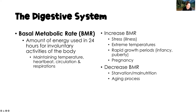Our basal metabolic rate is the amount of energy used in 24 hours for involuntary activities — just sitting on the couch, maintaining normal body temperature, heart beating, blood perfusing, and breathing. Things that increase our basal metabolic rate include stress, extreme temperatures, and rapid growth periods such as infancy, puberty, and pregnancy.